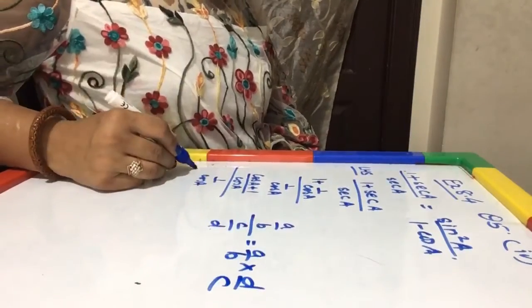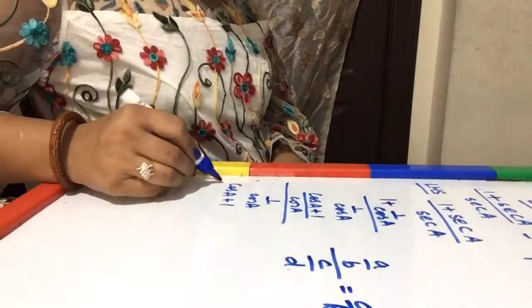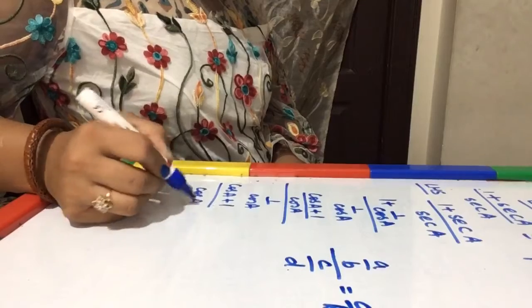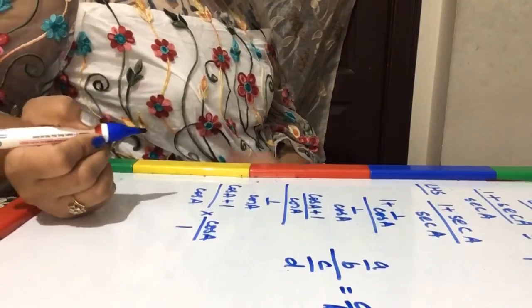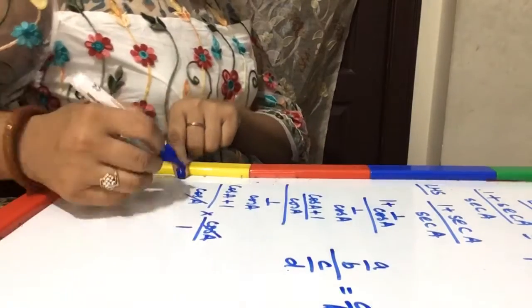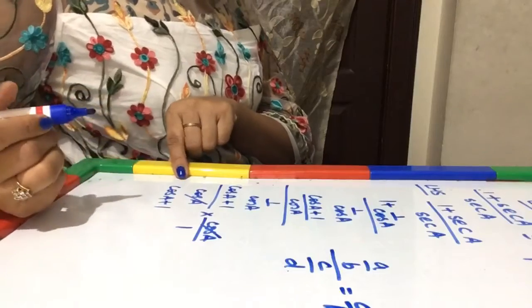So this will be applied here and this will be written as (cos A + 1) / cos A × cos A / 1. So this cos A and cos A get cancelled, and I will get (cos A + 1) / 1, or simply cos A + 1.